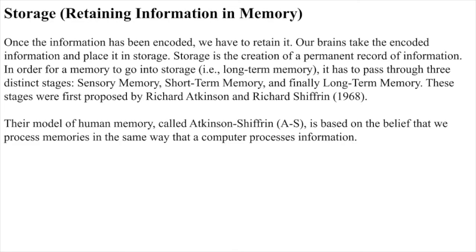Storage is the retaining of information in memory. Once the information has been encoded, our brains take it and place it in storage, which is the creation of a permanent record of information. In order for a memory to go into long-term memory, it has to pass through three distinct stages: sensory memory, short-term memory, and finally long-term memory. These stages were first proposed by Richard Atkinson and Richard Schifrin in 1968. Their model of human memory, called the Atkinson-Schifrin model, is based on the belief that we process memories in the same way that a computer processes information.